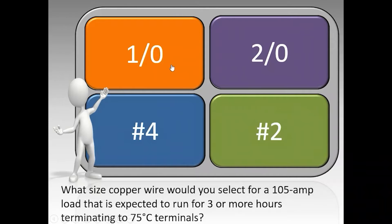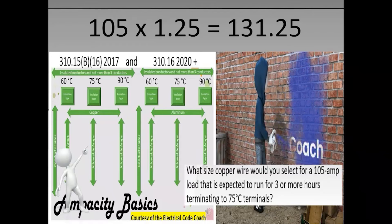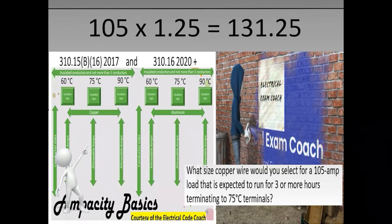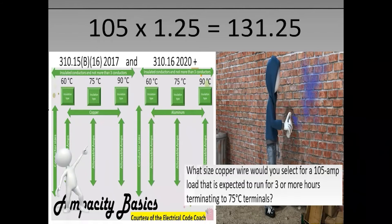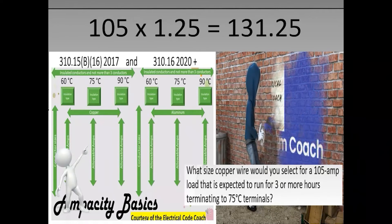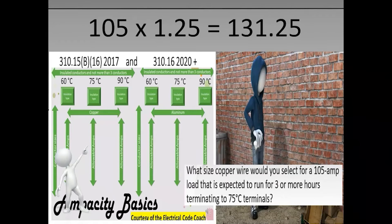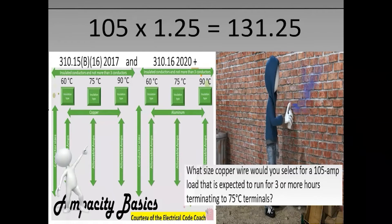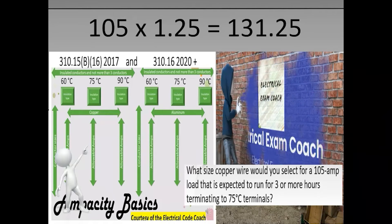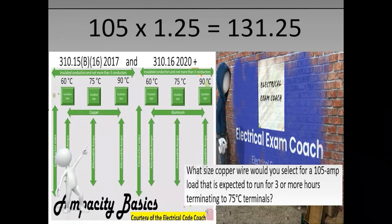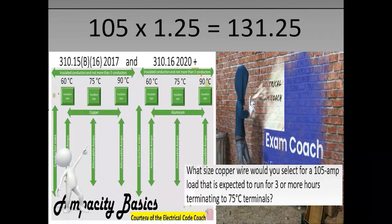The correct answer is 1-0. We take our starting ampacity and multiply it by 125%, giving a new known load of 131.25. We applied 125% because it's a continuous load. Then we head to our primary ampacity table and choose from the 75-degrees-C column, since it states we're terminating to 75-degrees-C terminals. We go down on the copper side to find a wire that covers our known load and select a 1-0.